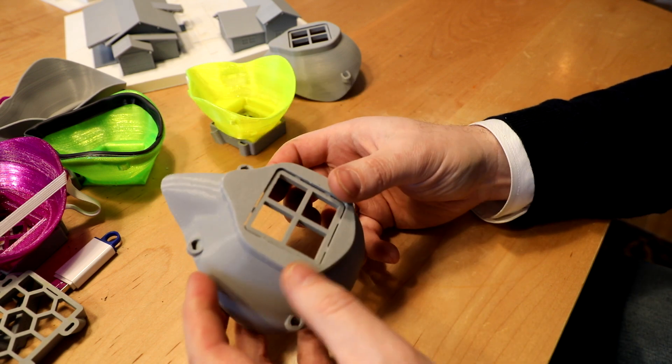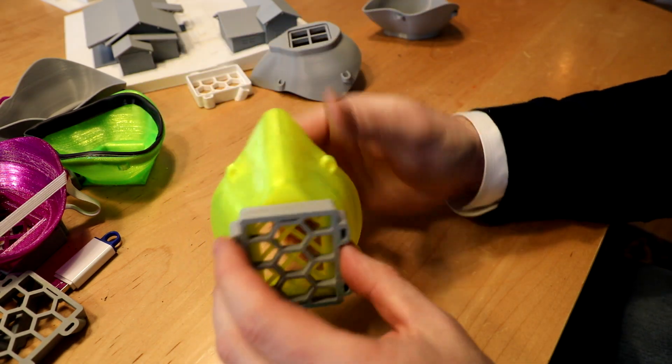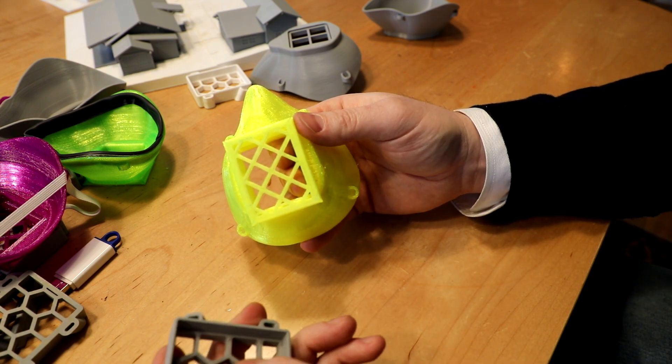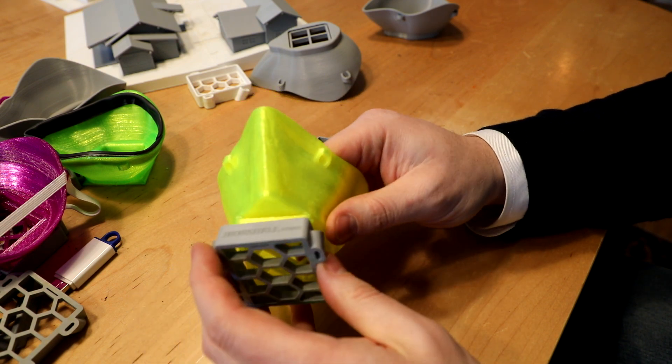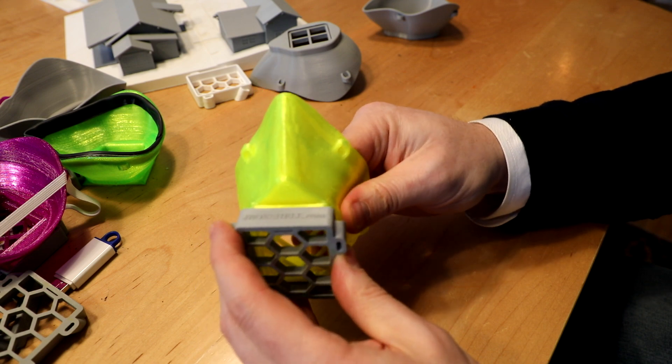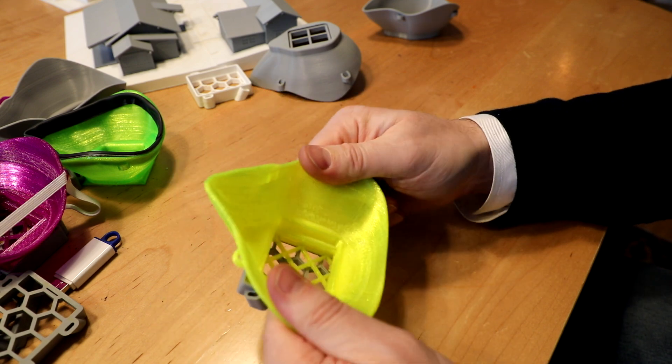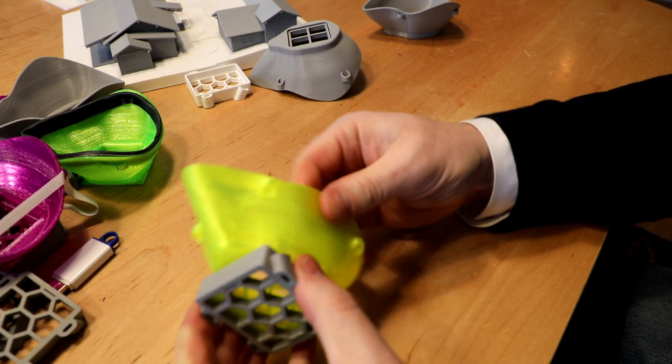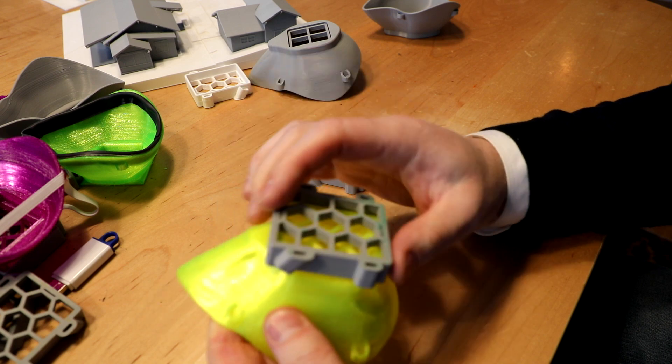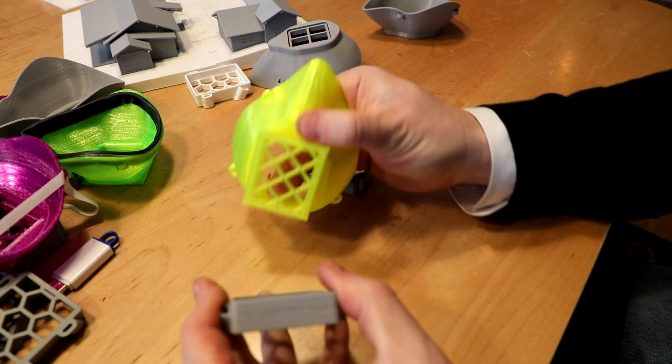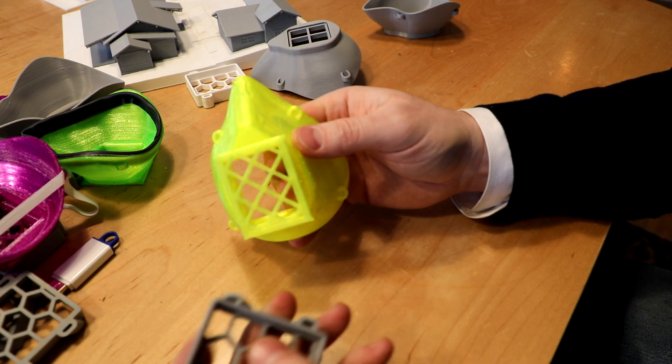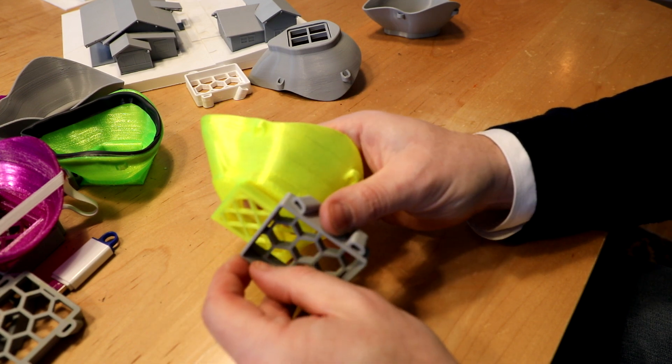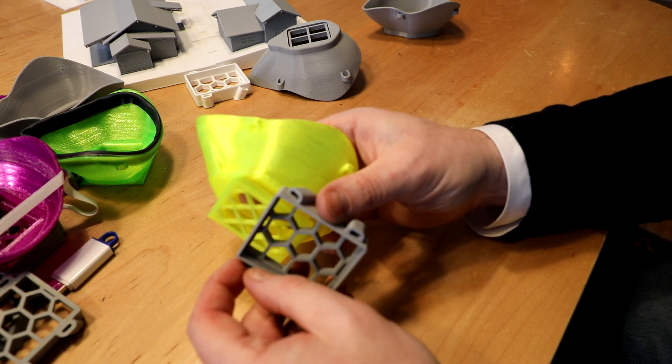The improvements that we were looking at were the ability to have a removable filter portion, so you could put a thicker filter in the front. Also, we wanted flexible material, so we used TPU for the part that touches your face. We used PLA for the filter cover, and this particular filter cover has the ability to put a pretty large filter material in there.